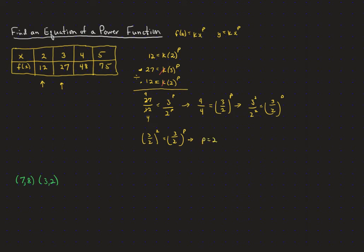It doesn't always work out that simply, but once we know p, we can go back to any equation — I prefer the one with smaller numbers. Since p is 2, that gives us 12 equals k times 2 squared, which is 4k. Dividing both sides by 4, k equals 3. So our power function is y equals 3 times x to the second power.